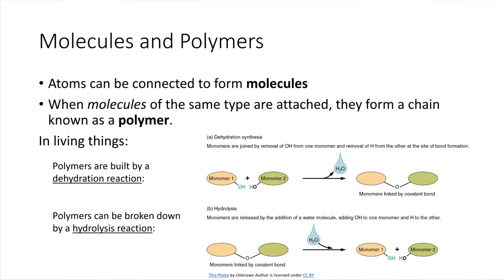So the individual building blocks, we're going to call those monomers. Mono means one, poly means many. So if we take a monomer, attach it to another monomer, attach it to another monomer, so on and so forth, eventually we'll end up with what's called a polymer.